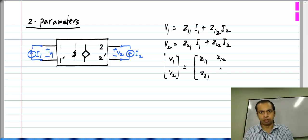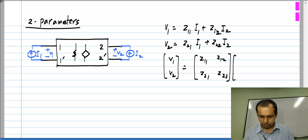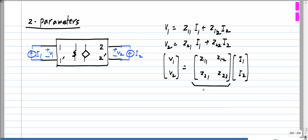This 2-by-2 matrix is known as the Z matrix or Z parameter matrix of the two-port. The definition is similar to Y parameters, except that here currents are independent variables and voltages are the dependent variables.